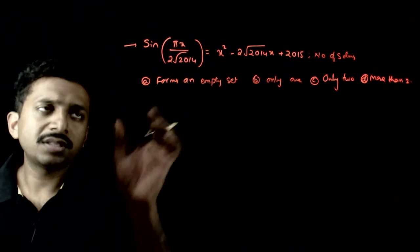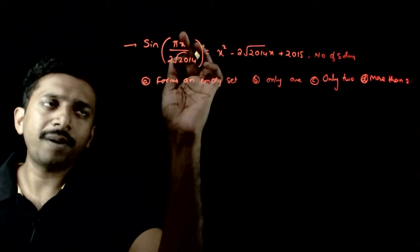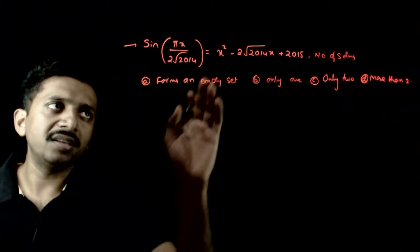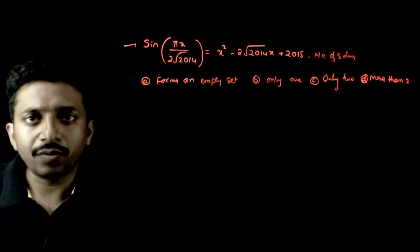Welcome students. This question may be asked: you have sin of (πx)/(2√2014) is equal to x² - 2√2014·x + 2015.